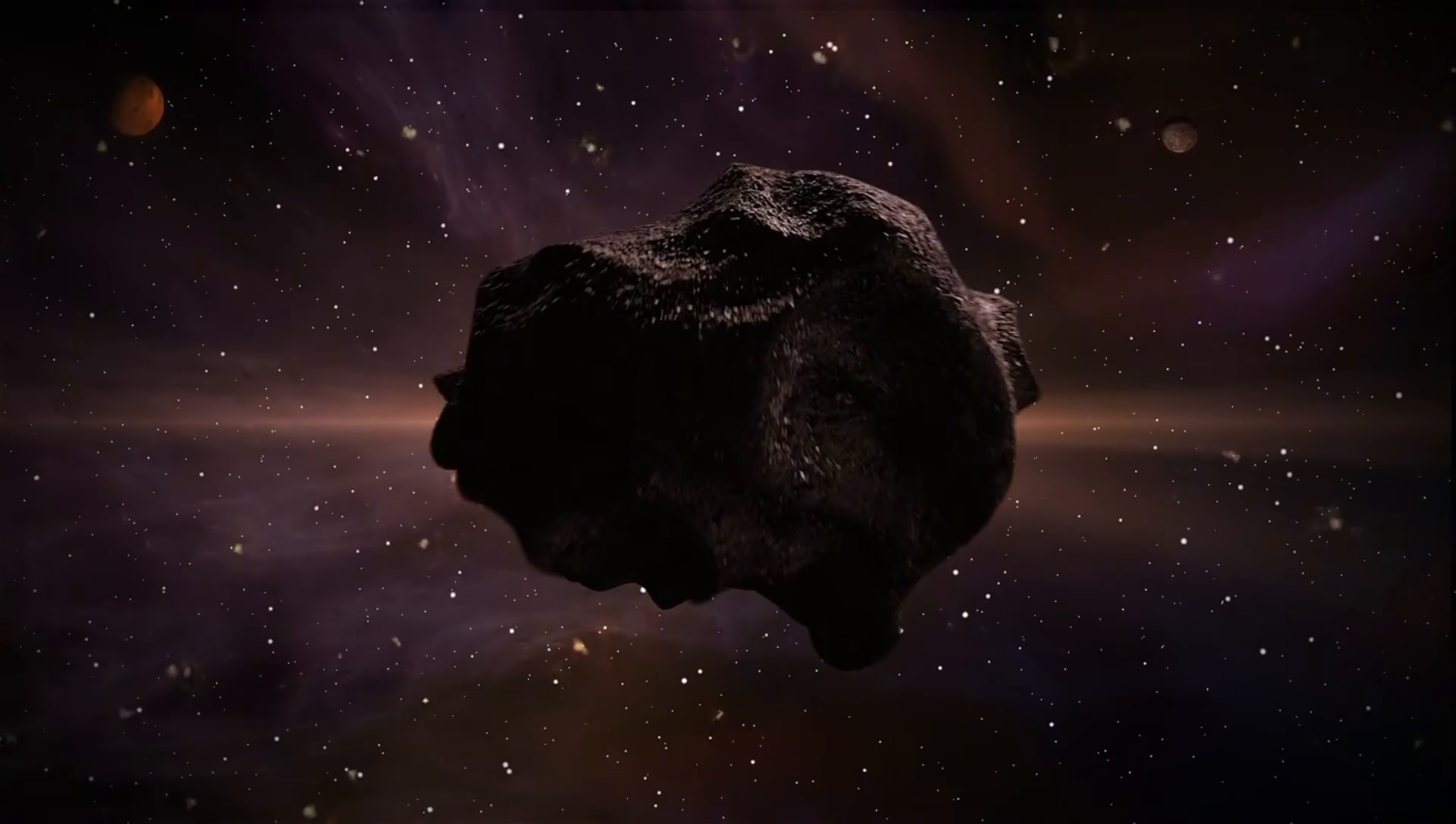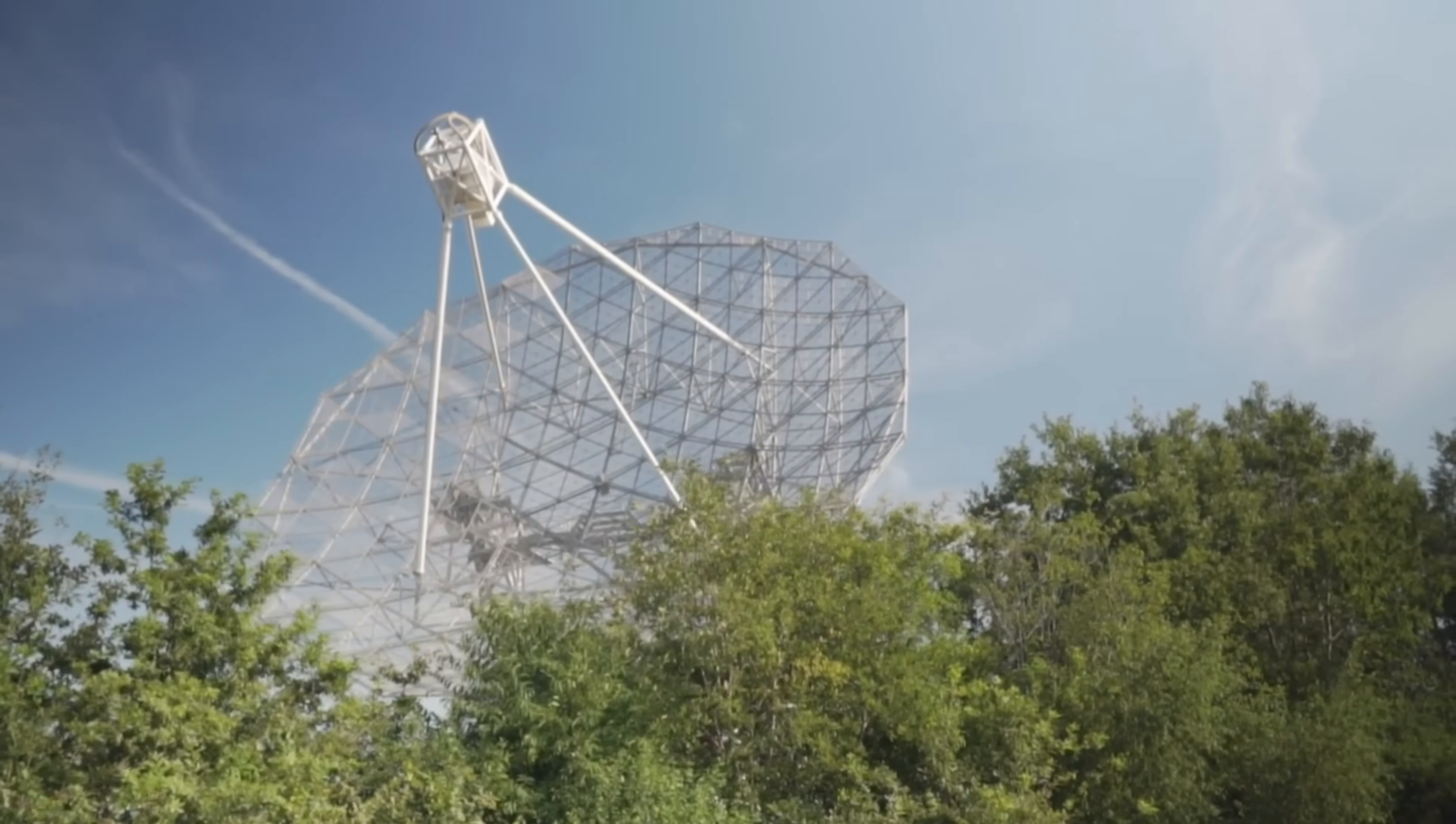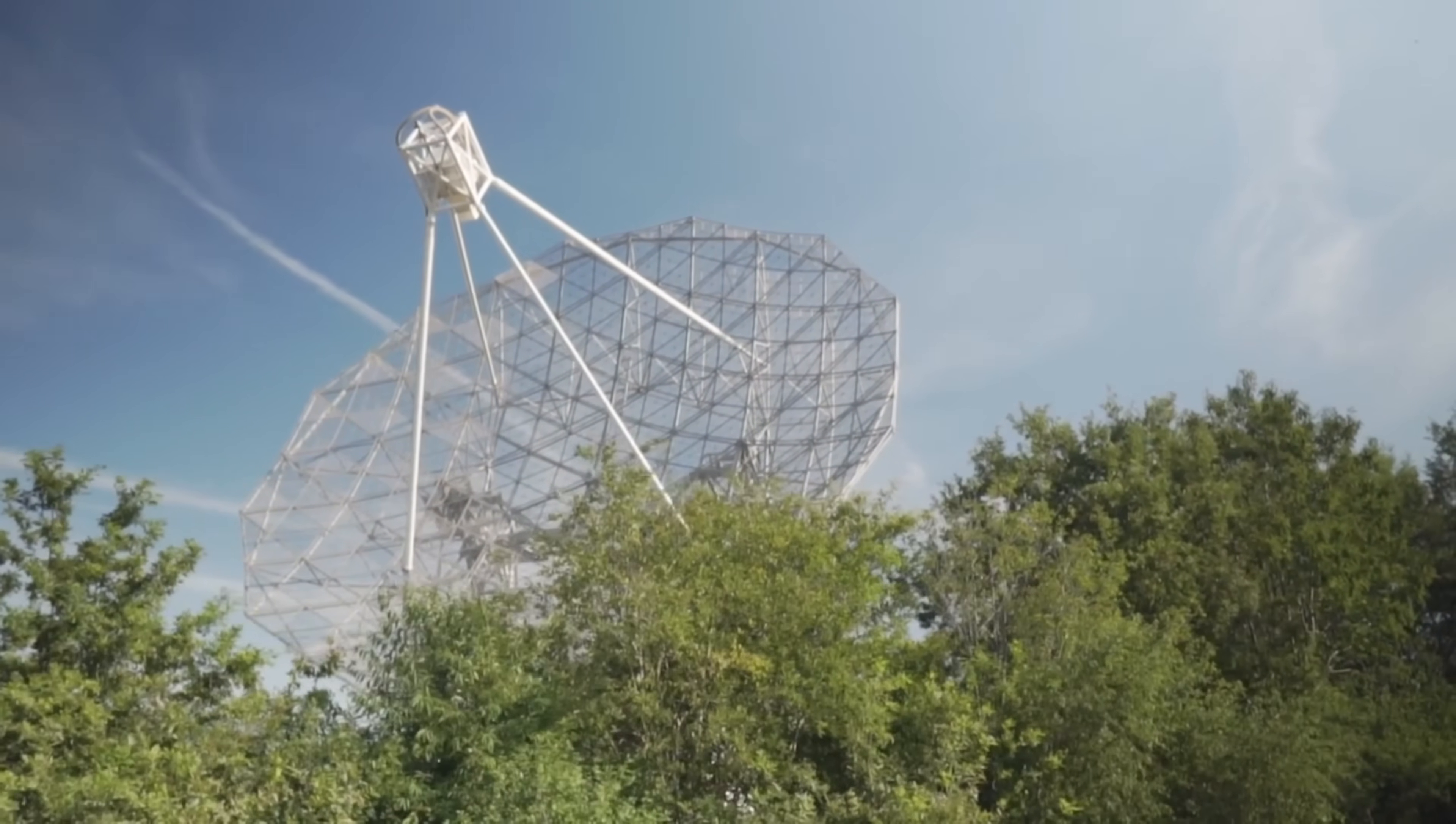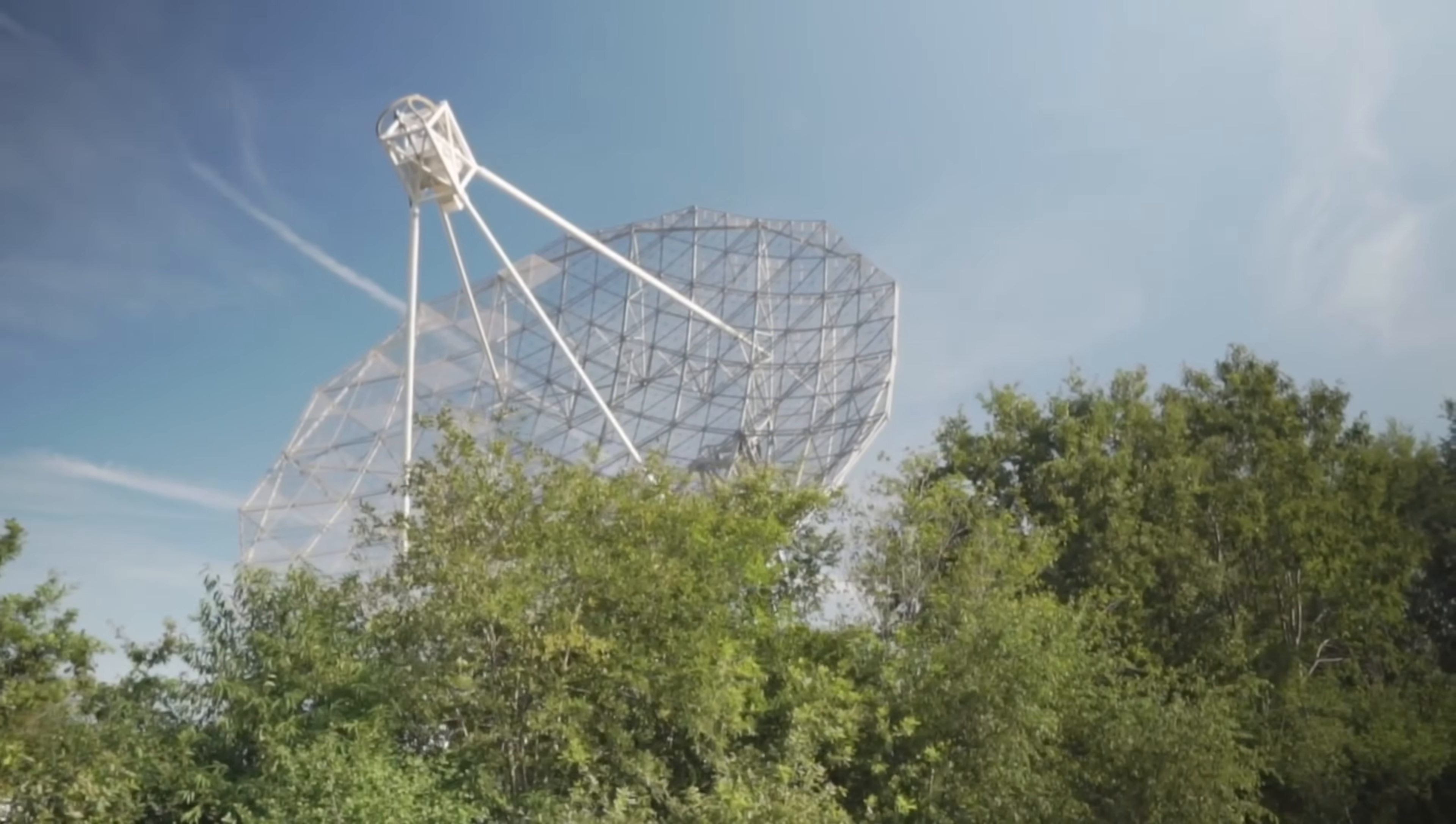Now, here's where it gets wild. NASA tracks more than 30,000 of these objects that come within about 30 million miles of Earth's path. That's not far at all on a cosmic scale. It's basically next door.